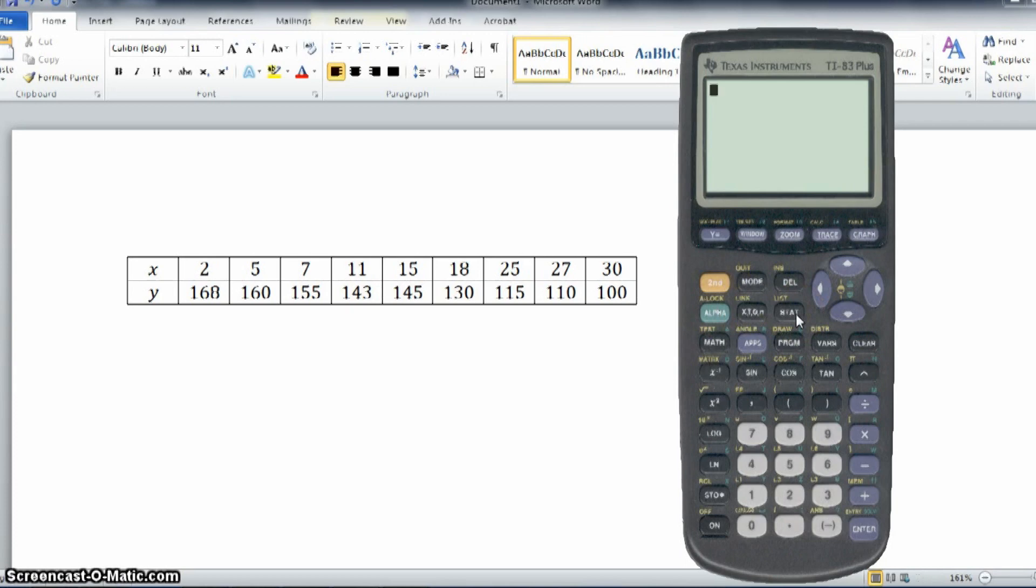We're going to go to stat, and then to edit, and we're going to input these two lists into column one and column two. So, we're going to go to column one first.